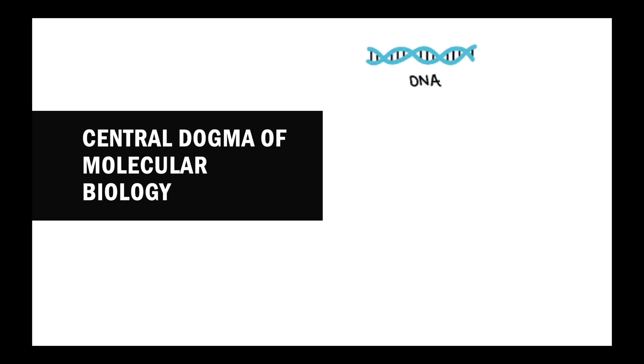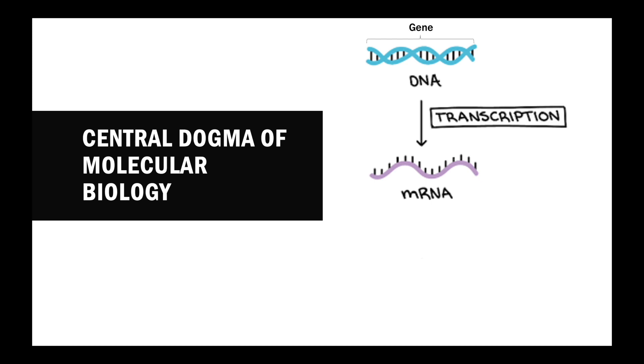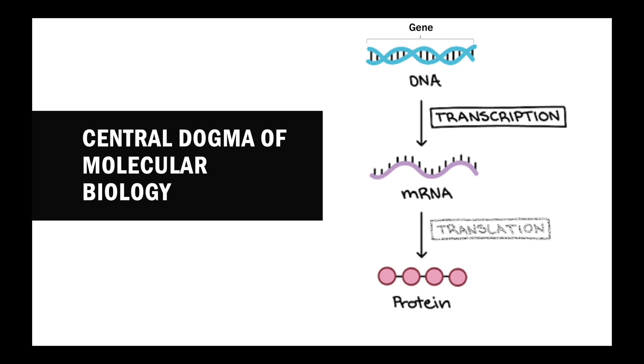Let's begin with learning about the central dogma of molecular biology. You have actually been introduced to the central dogma through the various chapters you have learned. In this dogma, the genetic information to make proteins is stored in the DNA, specifically at a particular stretch of DNA known as genes. The information in the gene will be copied into the form of mRNA during the process of transcription. The mRNA will carry the information to the ribosome to be read and translated into a sequence of amino acids forming proteins. This production of protein by the ribosome through the reading of mRNA is known as translation.